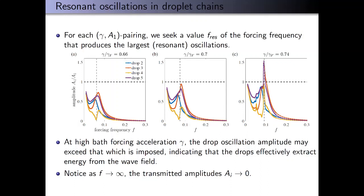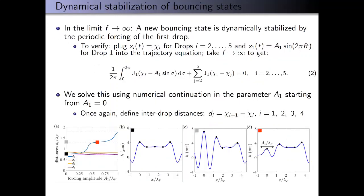Another thing we note is that in the limit as F approaches infinity, the transmitted amplitudes of the other four drops approach zero, like they're approaching another bouncing state. Basically, a new bouncing state is being dynamically stabilized by this rapid forcing on drop one.